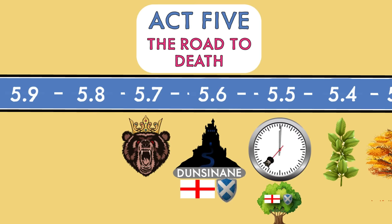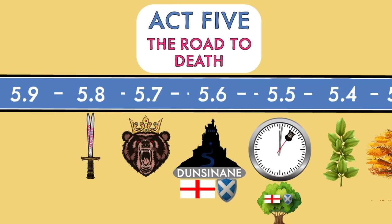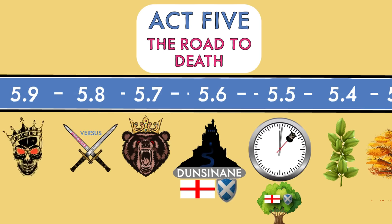Macbeth still thinks he can't be killed by any man of woman born. Finally, Macbeth comes face to face with Macduff, who reveals that he was not strictly born of a woman because he was born by a caesarean section where the mother's stomach is cut open. Macbeth now realises that the witches were equivocating — they were playing with words to obscure their real meaning. They fight and Macbeth is killed. Macduff then brings in the head of Macbeth, mirroring the death of Macdonald who was beheaded by Macbeth at the beginning of the play. Macduff hails Malcolm as king, and this restores the natural order.